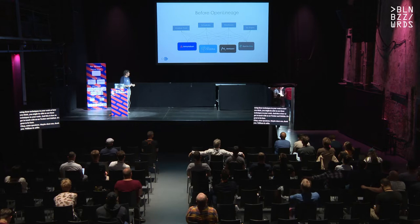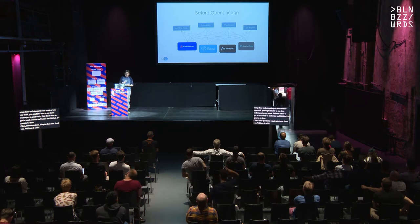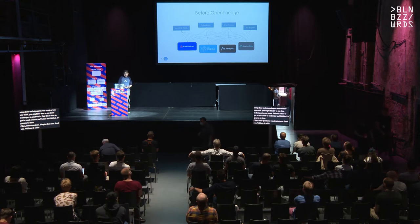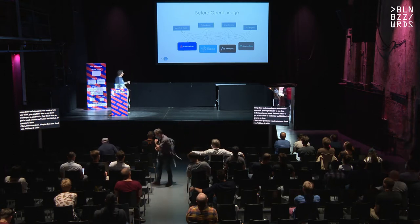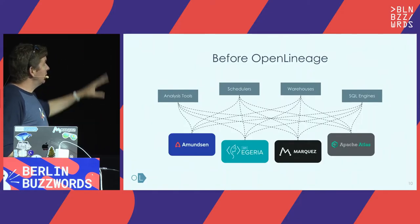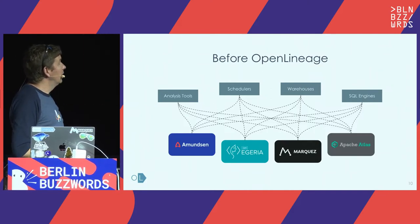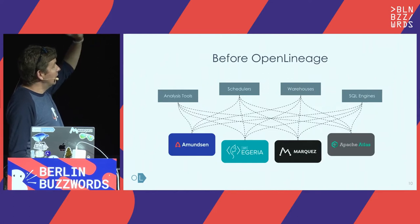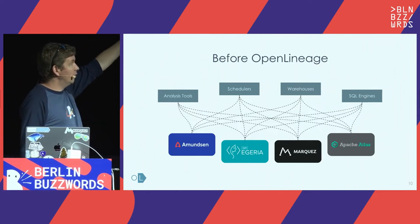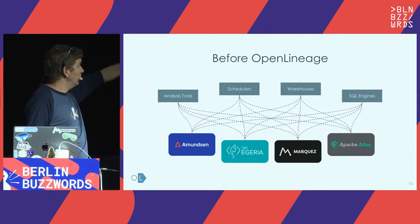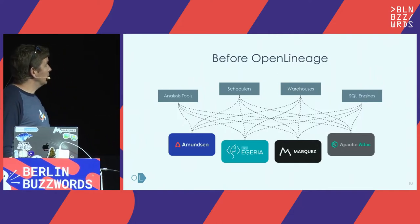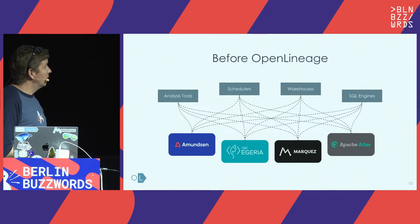The way we started this standard is by reaching out to the ecosystem — everybody needs lineage. We reached the conclusion that the only way to solve lineage is not by trying to collect from the outside, but really getting together as an ecosystem and agreeing on standards. There are two big categories: producers of lineage — tools like Pandas, Spark, other transformations, schedulers like Airflow, warehouses like Snowflake or BigQuery, SQL engines — and on the other side, consumers of metadata.